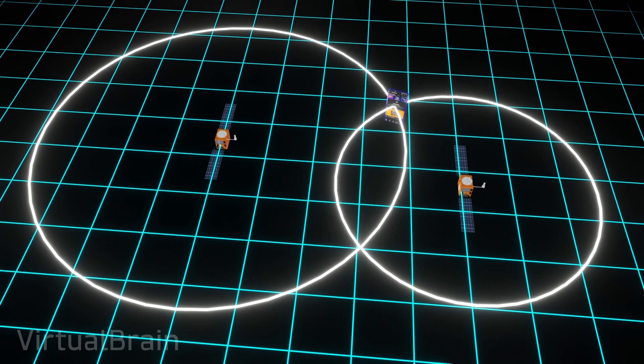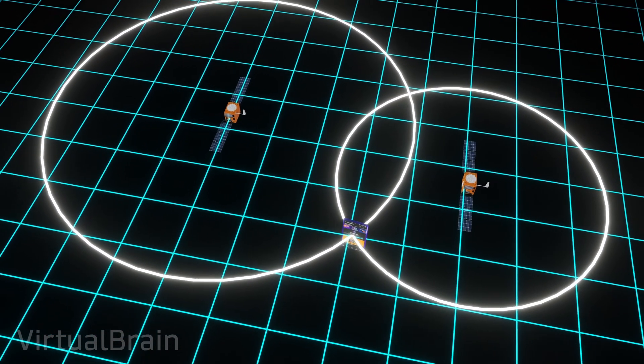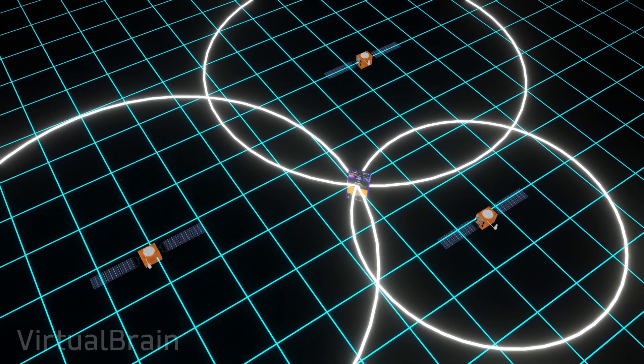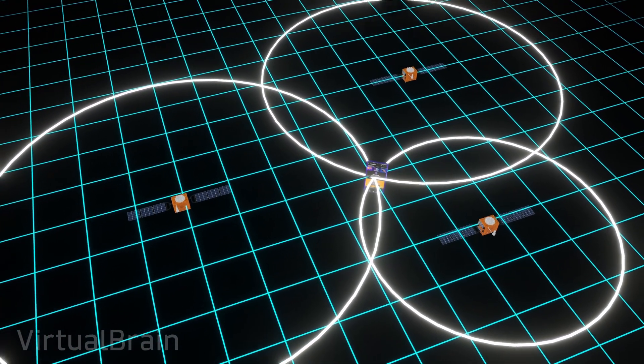Finally, to be 100% sure of the location of the phone we add a third satellite, and following the same logic there will only be one place where the circumferences of the three satellites meet.